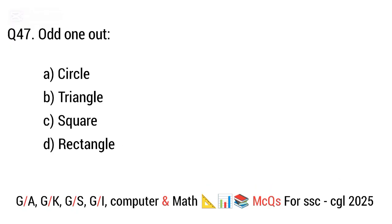Question 47. Odd one out: Option A: Circle, B: Triangle, C: Square, D: Rectangle. The right answer is option A. Circle — because it has no sides or corners, unlike the others.